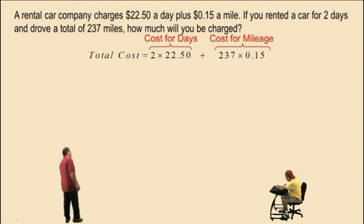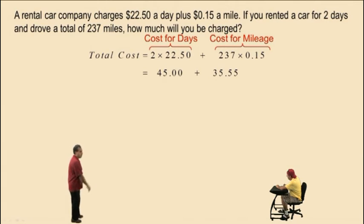Charlie, got your calculator? Yeah. Okay, what's 2 times 22.50? 45. 45, or 45 dollars in this case. Okay, Charlie, what's 237 times 0.15? 35.55. Very nice, $35.55. So our total cost is $80.55 to rent the car for two days and drive 237 miles.